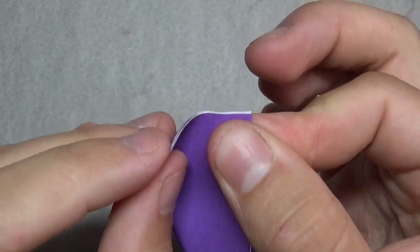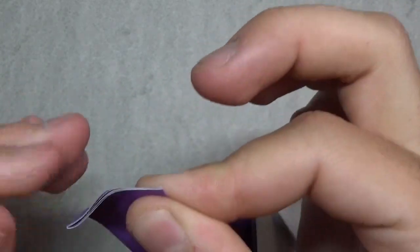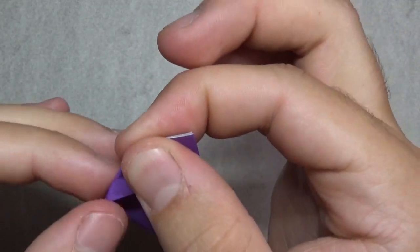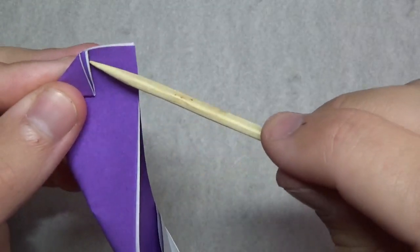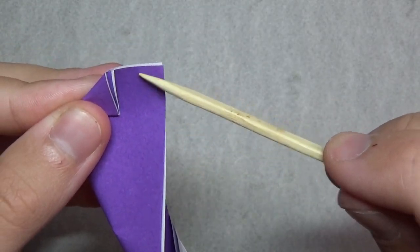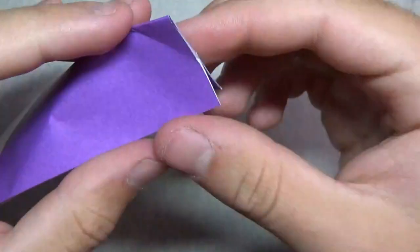And now we're going to take this part, and this is also kind of to taste, but I'm going to fold it right here, like this, so that this part right here is a square. Alright, like this. Make that nice and sharp. And now unfold that.